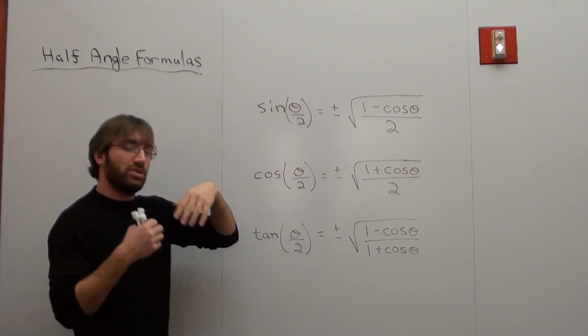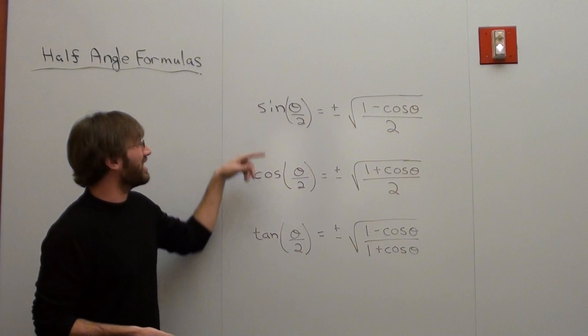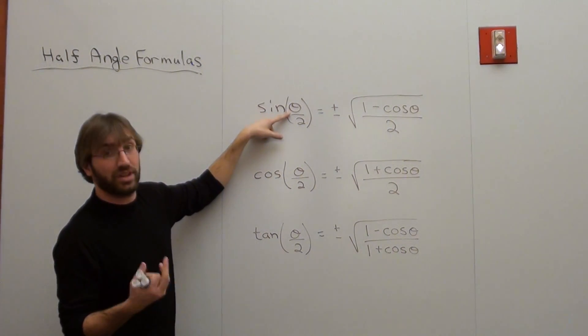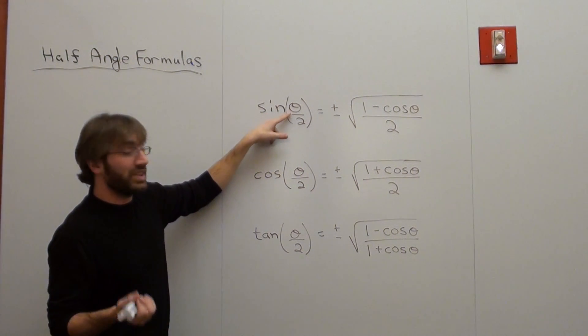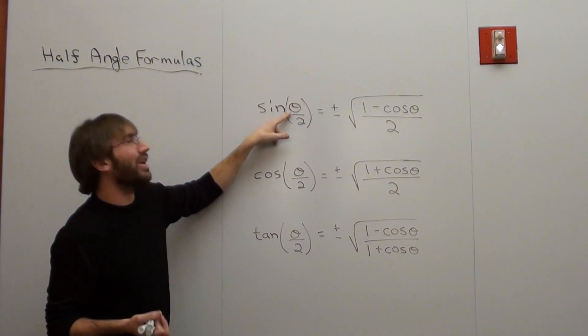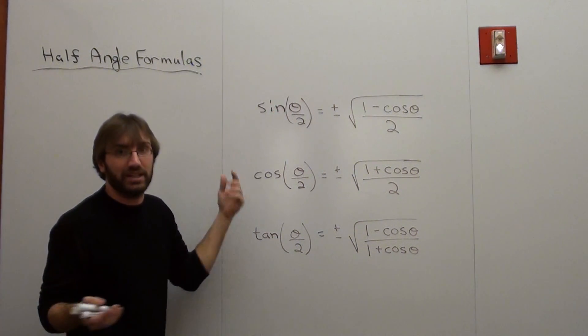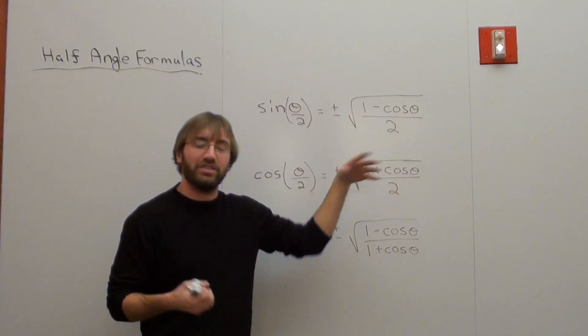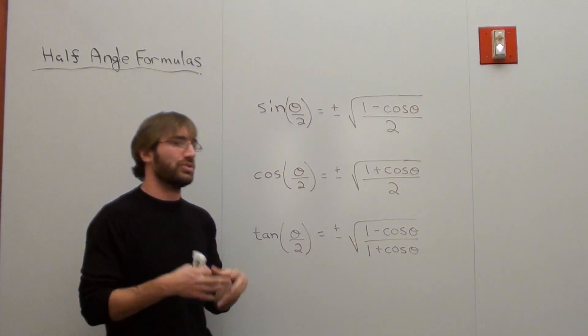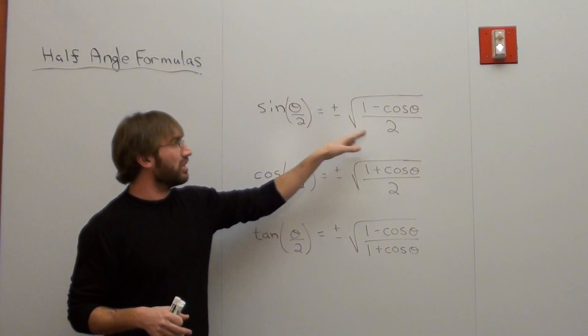So what I want to do in order to figure out the sine of 90 degrees is I actually want to plug in 180 for the theta. And what that's going to do is 180 over 2, which will be 90 degrees. So I'm going to plug in 180 for each theta and show that this side will equal that side.